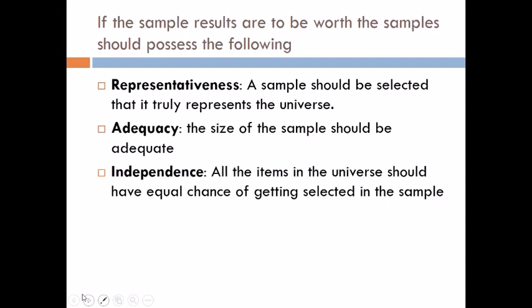Independence: all the items of the sample should be selected independently of one another, and all items of the universe should have the same chance of being selected in the sample. By independence of selection, we mean that the selection of a particular item in one draw has no influence on the probabilities of selection in another draw. Simply put, all items in the universe should have an equal chance of getting selected into the sample.